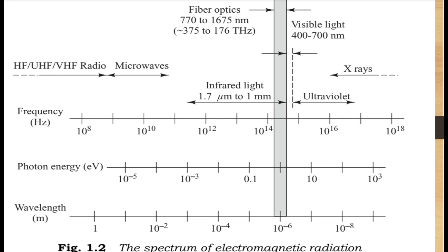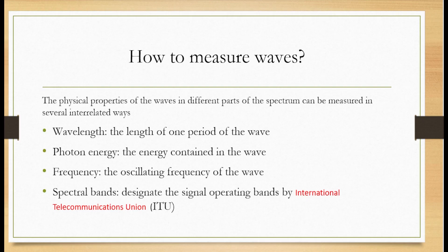So now, the next question is, how to measure waves and which is correct or efficient parameter? The physical properties of the waves in different parts of the spectrum can be measured in several interrelated ways. There are 4 waves or basically 3 waves.